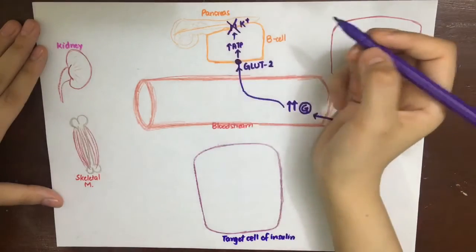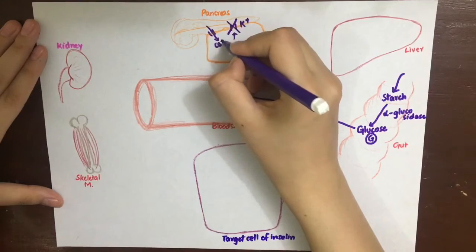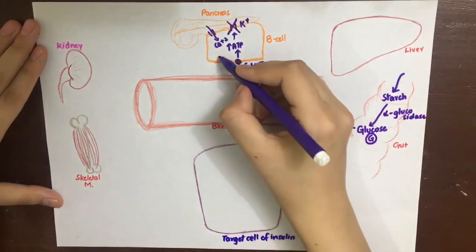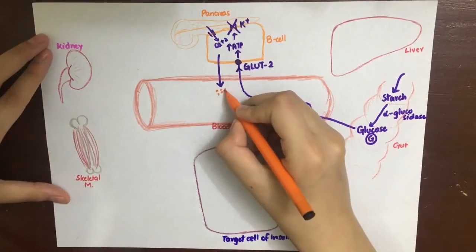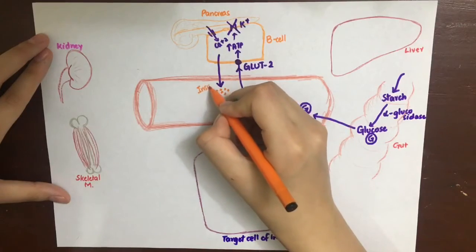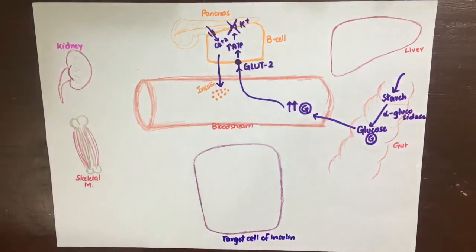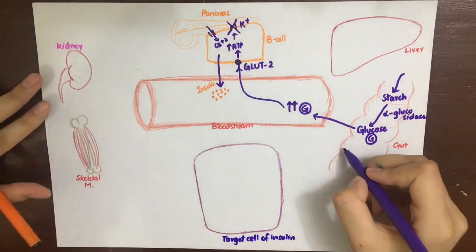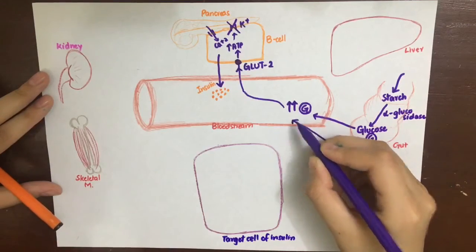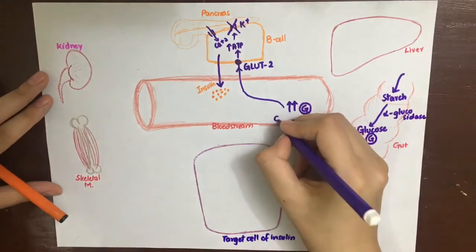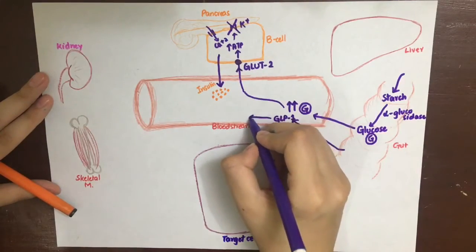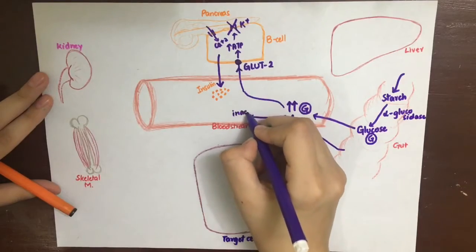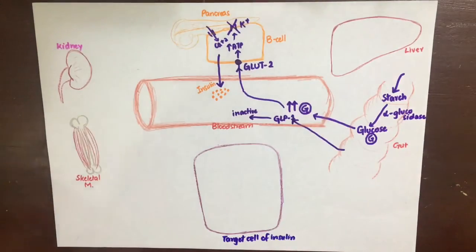After blocking the potassium channels, the cell will depolarize and cause calcium entry. The calcium entry will then cause degranulation of previously formed insulin granules in the beta cell, and thus insulin will be released into the blood. The presence of food in the gut also stimulates the secretion of glucagon-like peptide 1 (GLP-1), which is an incretin that increases glucose-dependent insulin secretion, but it is a very short-lived molecule, rapidly degraded by DPP4 (dipeptidyl peptidase 4) into inactive metabolites.